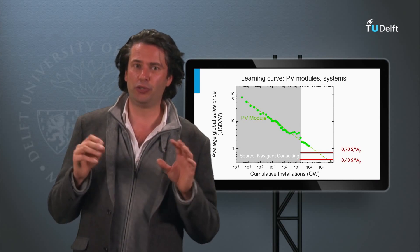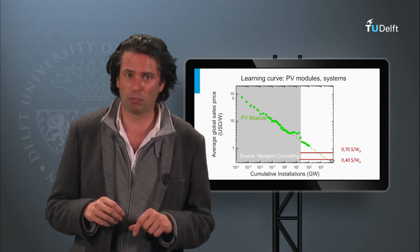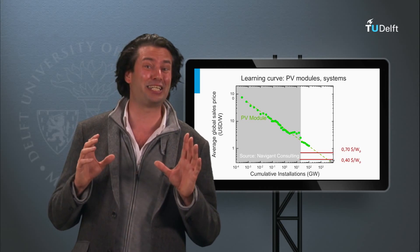NREL has confirmed a new record conversion efficiency for a cadmium telluride solar module of First Solar of 16.1%.